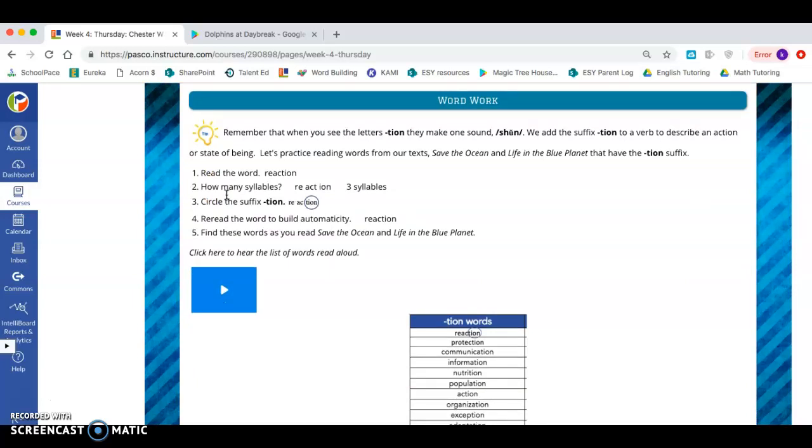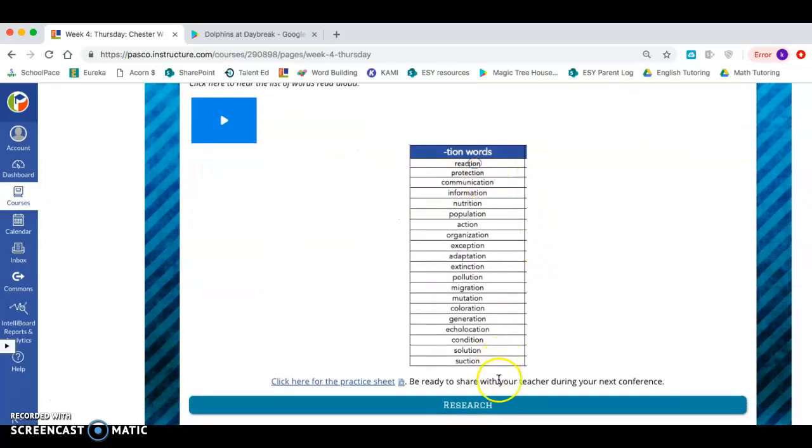All right, next we're going to work on our word work. Today for word work, we're going to practice three syllable words. Remember the syllable is how many times your chin drops or how many times you clap when you say the word. So if I look at the word reaction and I say it, my chin drops three times: re-ac-tion. I can also clap it: re-ac-tion. So it's three syllables. When I look at the suffix shun, like we've been working on, I can circle that to show that that's a syllable. Let's look at this list of words and read it.